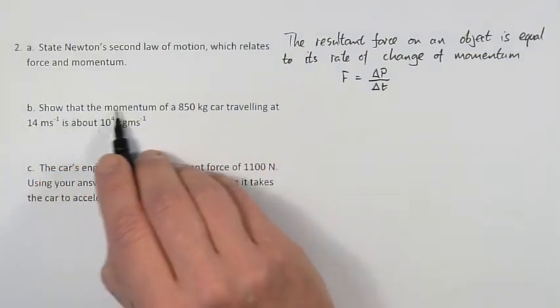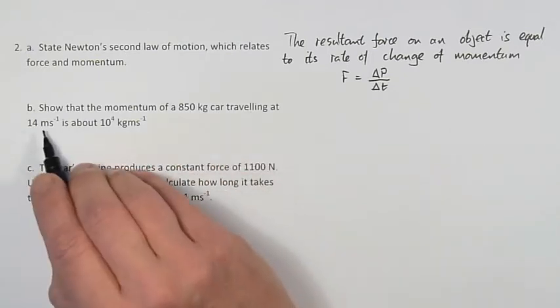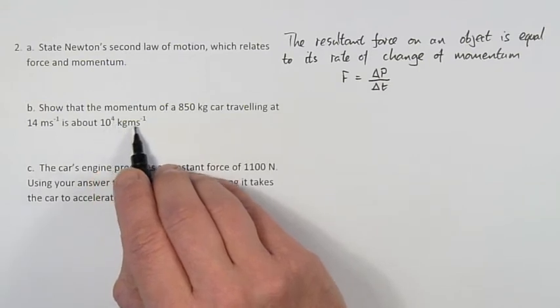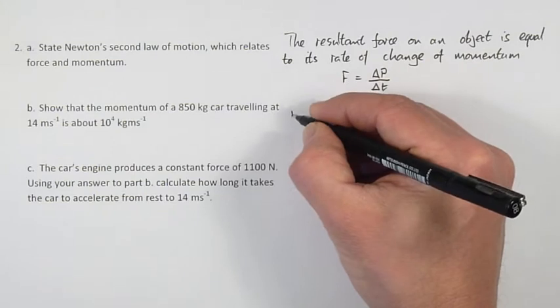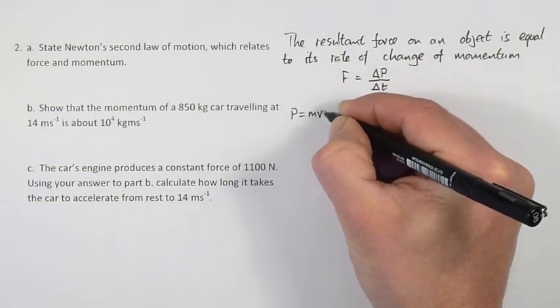Part B. Show that the momentum of an 850 kilogram car travelling at 14 metres per second is about 10 to the power of 4 kilograms metres per second. We use the momentum formula. P for momentum is the mass times the velocity.